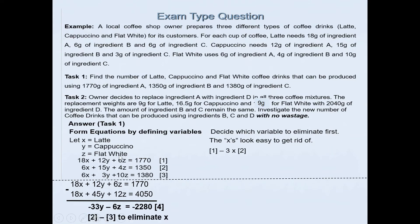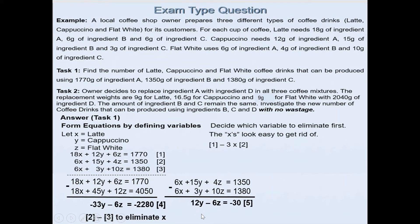We'll now use equations 2 and 3 because the coefficient of x is the same. It's easier to just go equation 2 minus equation 3 to get rid of x. 6x plus 15y plus 4z is 1350, and the third equation 6x plus 3y plus 10z is 1380. If I subtract the two, I will end up with 12y because 15 take away 3 is 12. 4 take away 10 is minus 6, so 12y minus 6z equals negative 30 because 1350 take away 1380 is minus 30. That's our fifth equation.